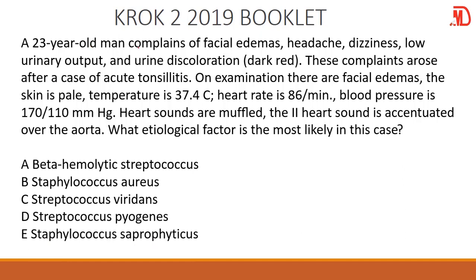We have a 23-year-old man complaining of facial puffiness, headache, dizziness, low urine output, and urine discoloration. This can be called nephritic syndrome because there is blood and low urine output. The person had acute tonsillitis. Anytime you see something like this — somebody suffering from acute tonsillitis and developing kidney problems — we call it post-streptococcal glomerulonephritis. This is usually caused by the beta-hemolytic streptococcus, and that is the etiological factor.